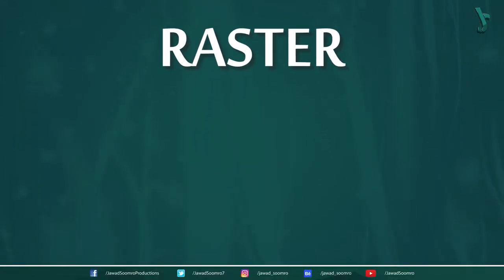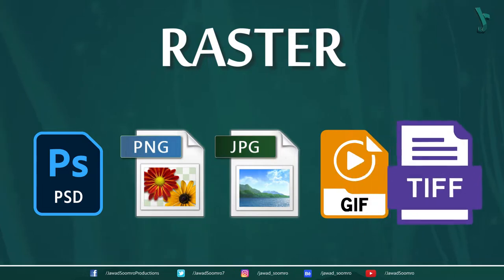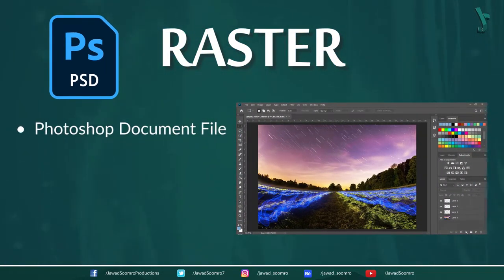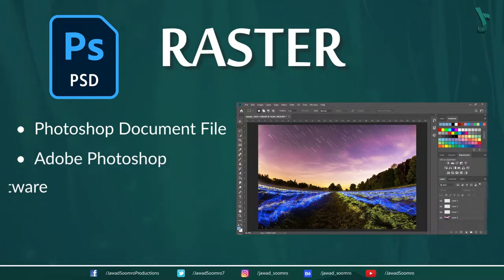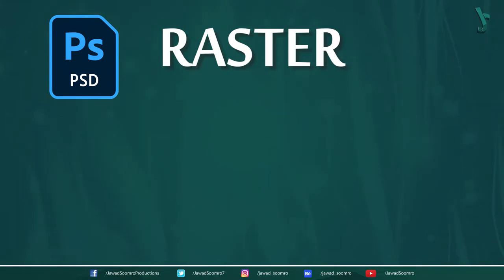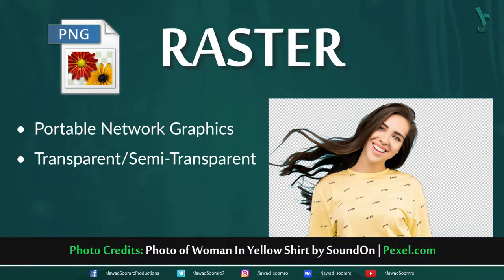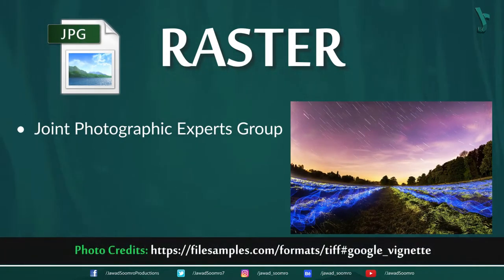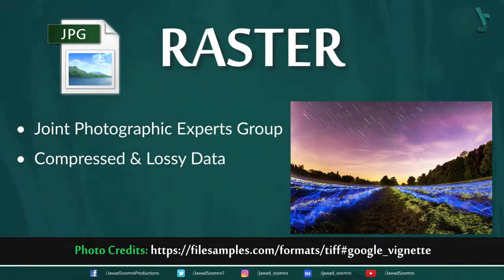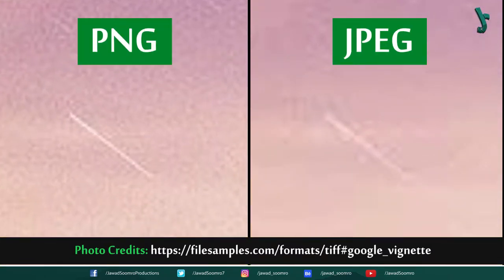Raster graphics have different file formats such as PSD, PNG, JPEG, GIF, and TIFF. PSD is a Photoshop document file native to Adobe Photoshop — image editing software that supports multiple image layers and various imaging options. PNG is Portable Network Graphics that can handle graphics with transparent or semi-transparent backgrounds. JPEG is Joint Photographic Experts Group, which has lossy and compressed image data. Despite the compression, JPEG images maintain reasonable image quality. PNG raster graphics has lossless data compression as compared to JPEG raster graphics.